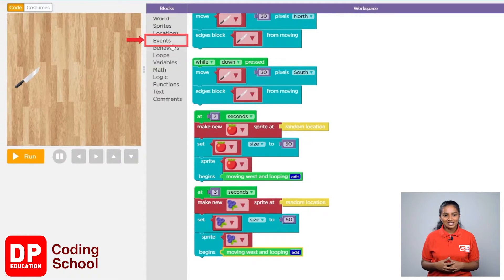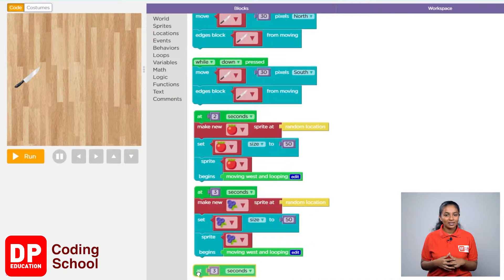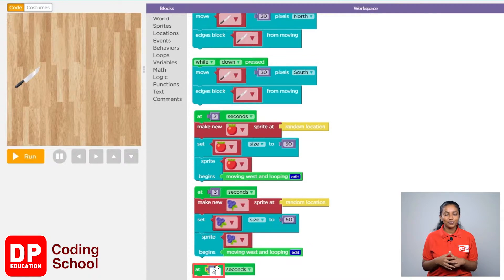I clicked on events. Now drag the at 3 seconds block to the workspace like this. Here I change it to 4 seconds.